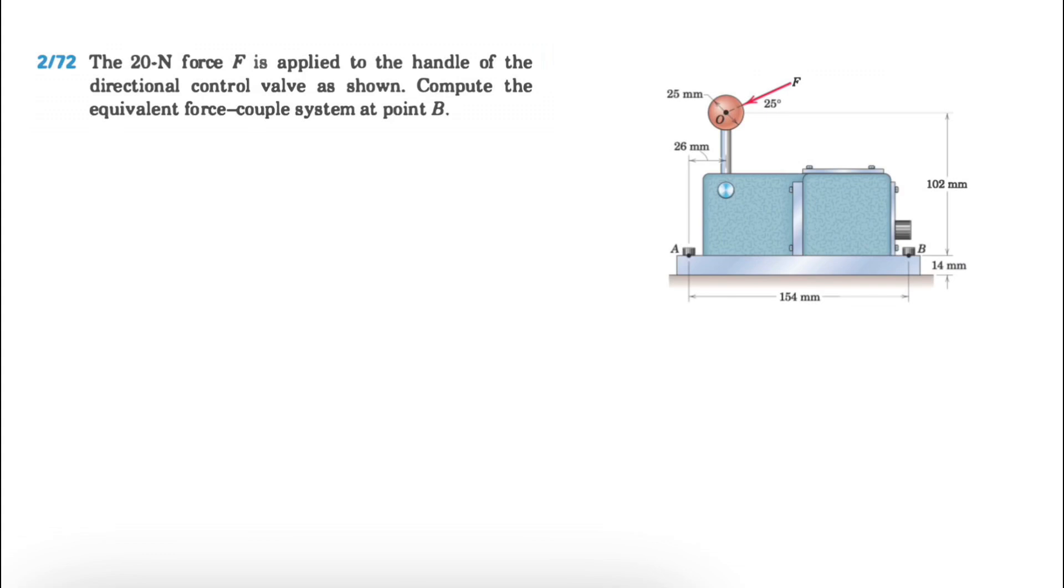Welcome back. We're going to be solving question 72 from the second chapter of the Mayhem textbook. We have this 20 Newton force applying to the handle of the directional control valve as we can see, and we need to compute the equivalent force couple system at point B.